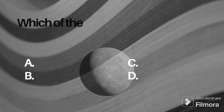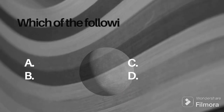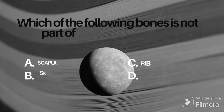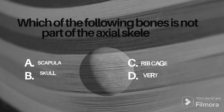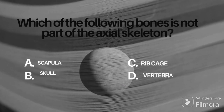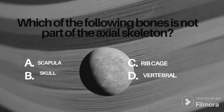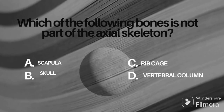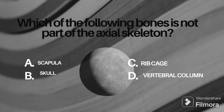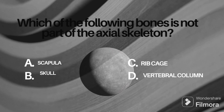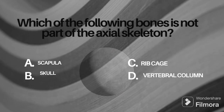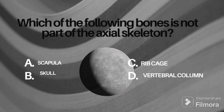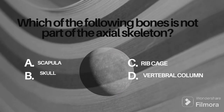Question 8: which of the following bones is not a part of the axial skeleton? Option A: scapula, B: skull, C: ribcage, D: vertebral column.